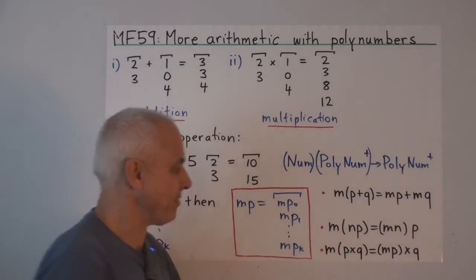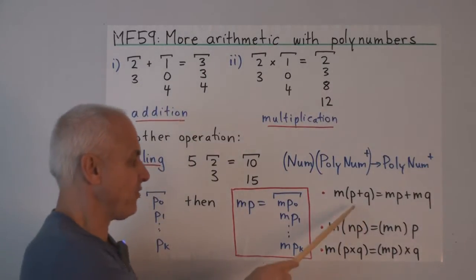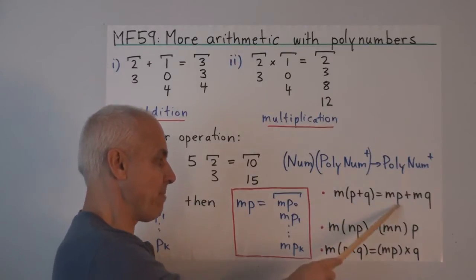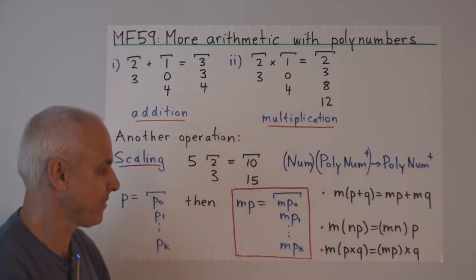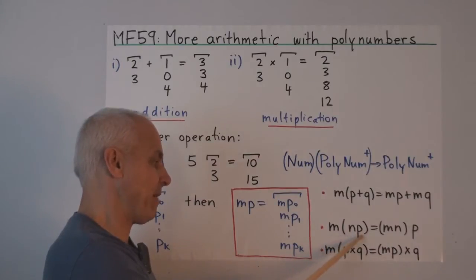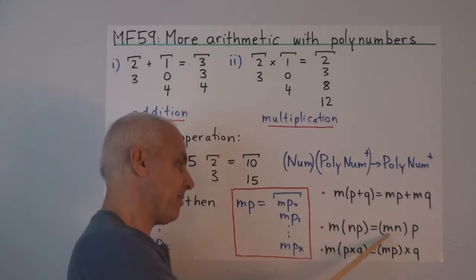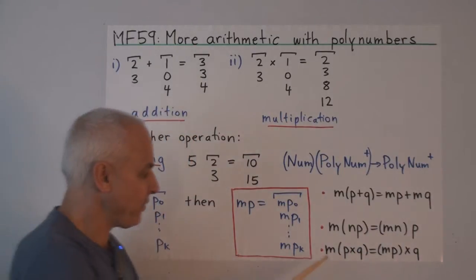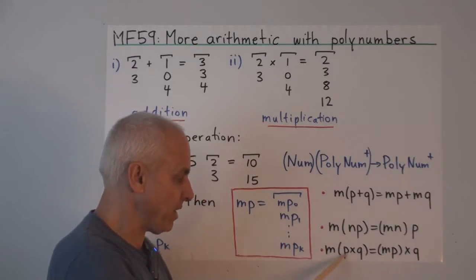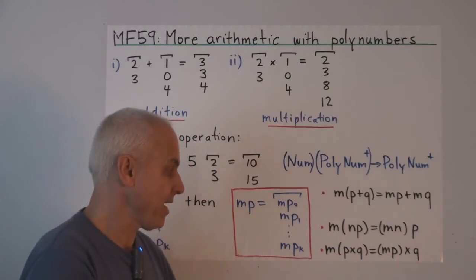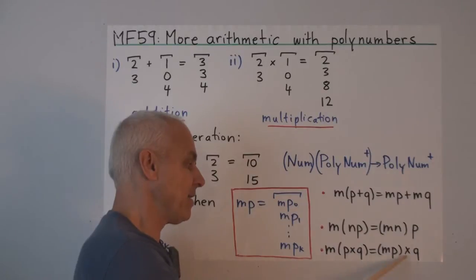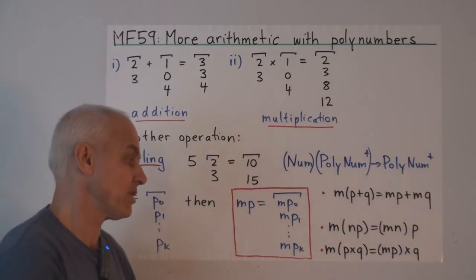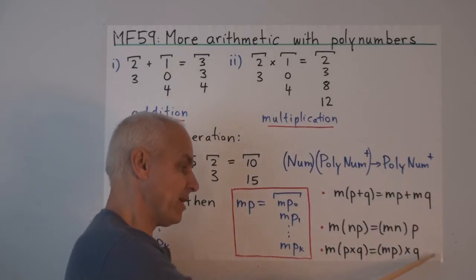And this operation has some obvious properties, that if you have two polynumbers, p and q, and you take m times p plus q, you get mp plus mq. If you have two numbers, m and n, and you multiply a polynumber p first by n, and then by m, it's the same as multiplying p by the product mn. And if we have m times pq, where p and q are both polynumbers, that's the same as mp times q, which is also the same as p times mq.